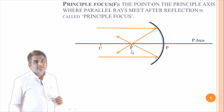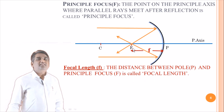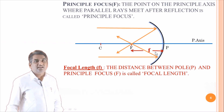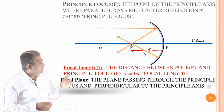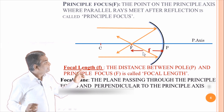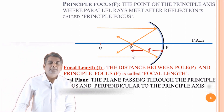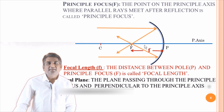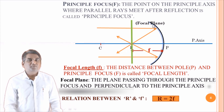The next one is focal length. The distance between pole P and the principal focus F is called focal length, denoted by f. The plane passing through the principal focus and perpendicular to the principal axis is called the focal plane.